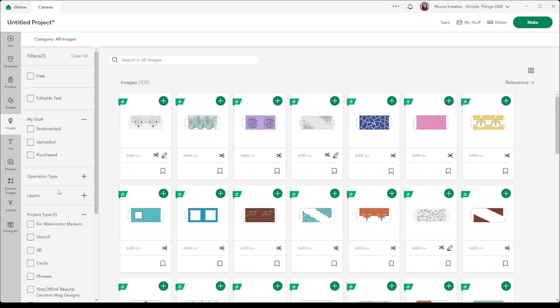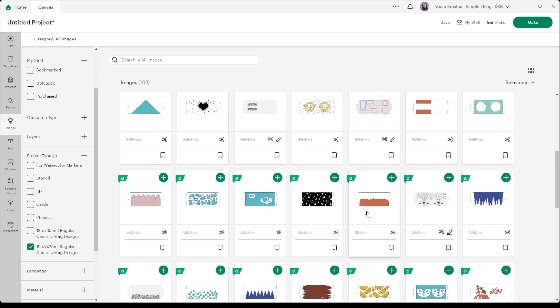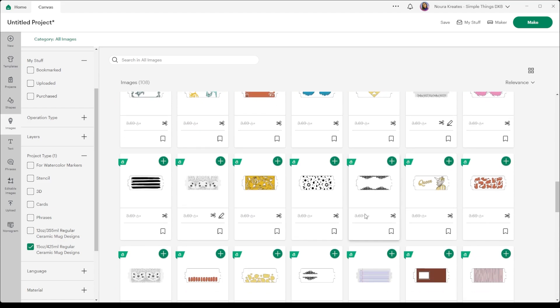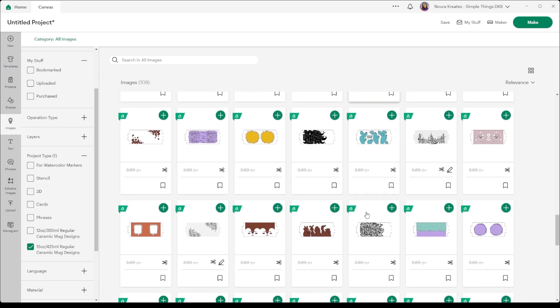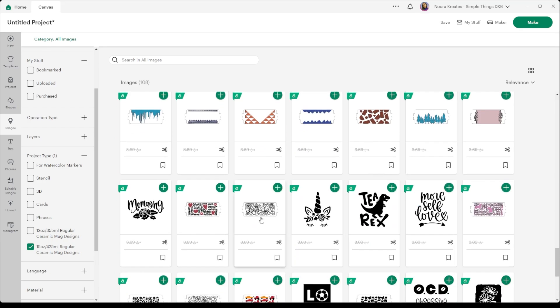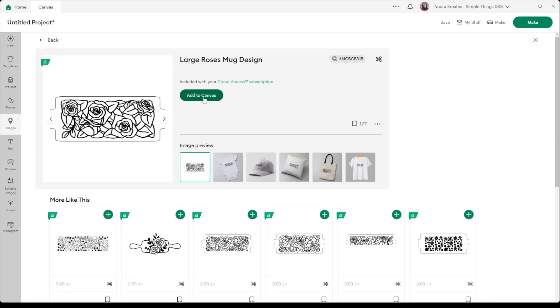Now to get to these, you need to click on project type, and I clicked on 15 ounce regular ceramic mug designs. So I'm just going to search here and see if I like anything. I have spotted a roses design earlier. Let me scroll. Yes, this one. So I think I'm going to use this design.